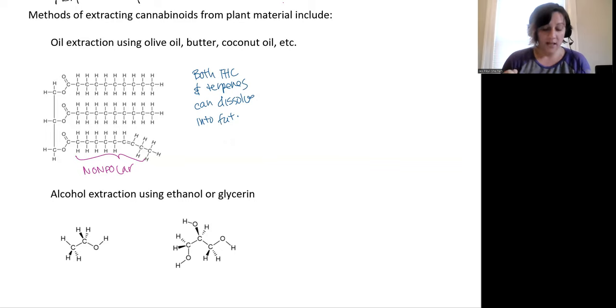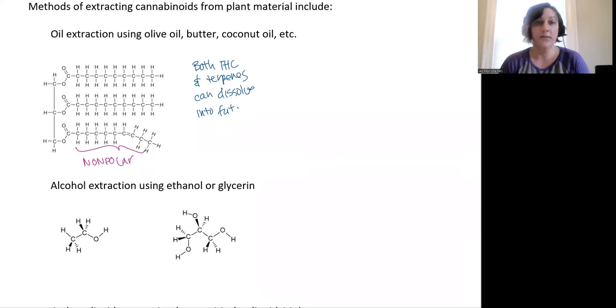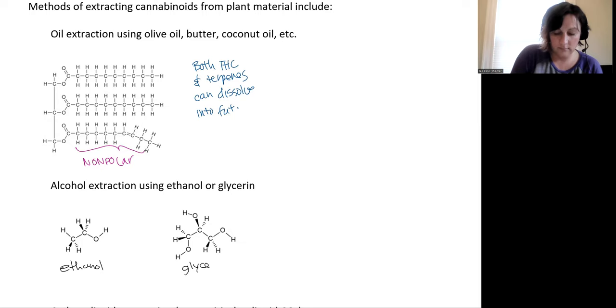Then another very common type of extraction is using alcohols. And here we have ethanol and we have glycerin, which are two very common tincture solvents. And for this, you would again take that plant material and soak it in the ethanol or in the glycerin over a long period of time, agitating it. And you can usually keep these at room temperature.